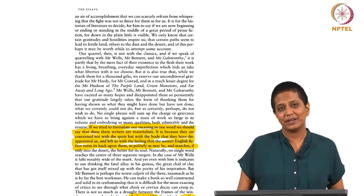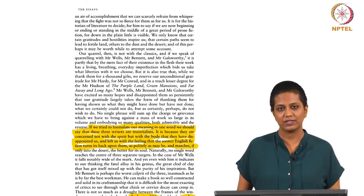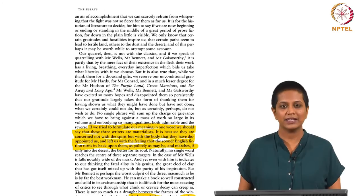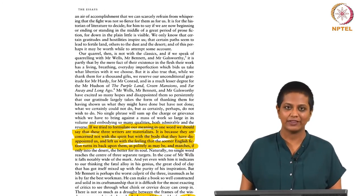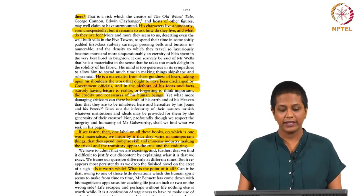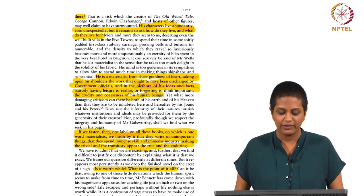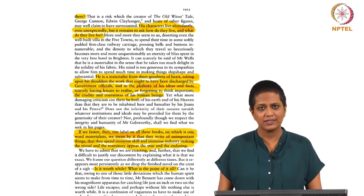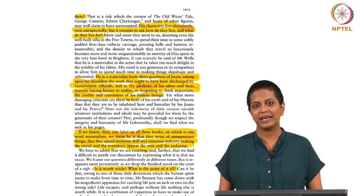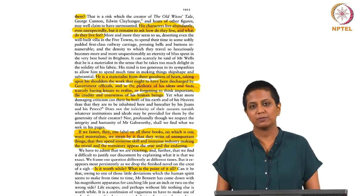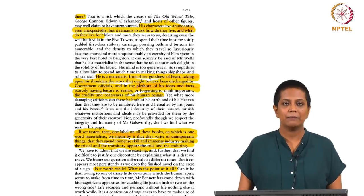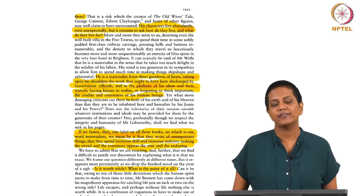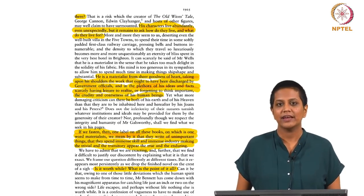She says the biggest culprit here is Arnold Bennett, because he is actually a really good craftsman — his novels can be compared to a beautiful house that is designed wonderfully, but it is a house with no life in it. According to her, Bennett's characters 'live abundantly, even unexpectedly,' but it remains to ask how do they live and what do they live for? The characters are well defined, their external circumstances and appearance described in detail, but these characters do not have a depth of soul. They act as props for the novelist to construct a great plot — that is their sole purpose in the novel. Virginia Woolf believes that this kind of characterization is clearly materialist.